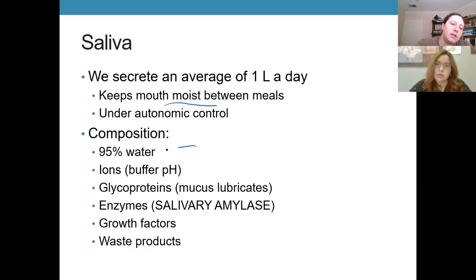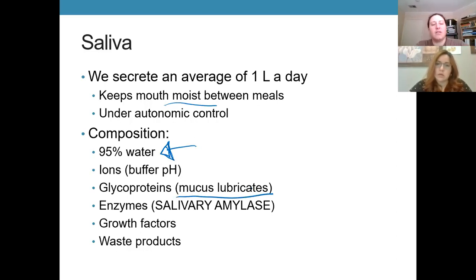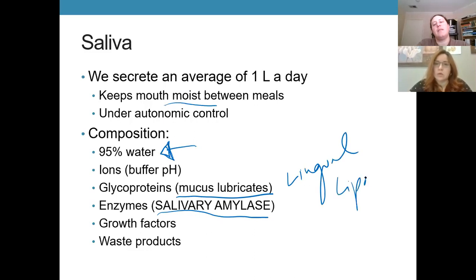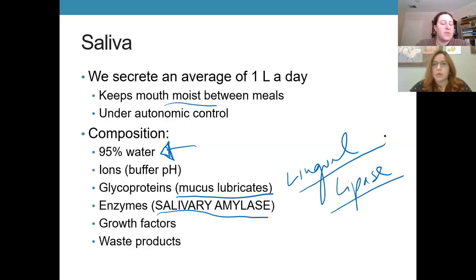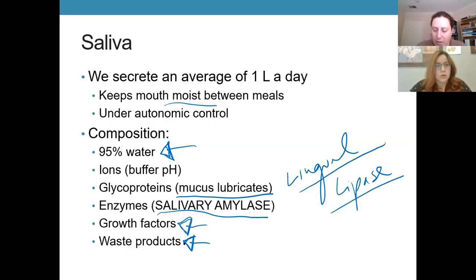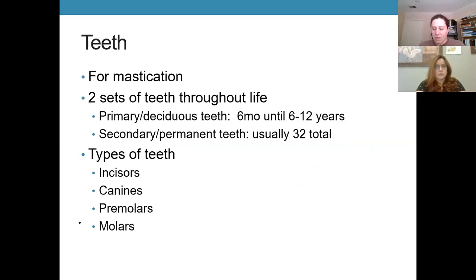Saliva is mostly water but also contains ions to maintain appropriate pH, glycoproteins — essentially what mucus is — and enzymes, notably salivary amylase. There's also lingual lipase, which is supposed to start fat digestion, though how relevant it is is unclear. Growth factors and certain waste products are also present, but we'll focus mostly on the components involved in digestion.